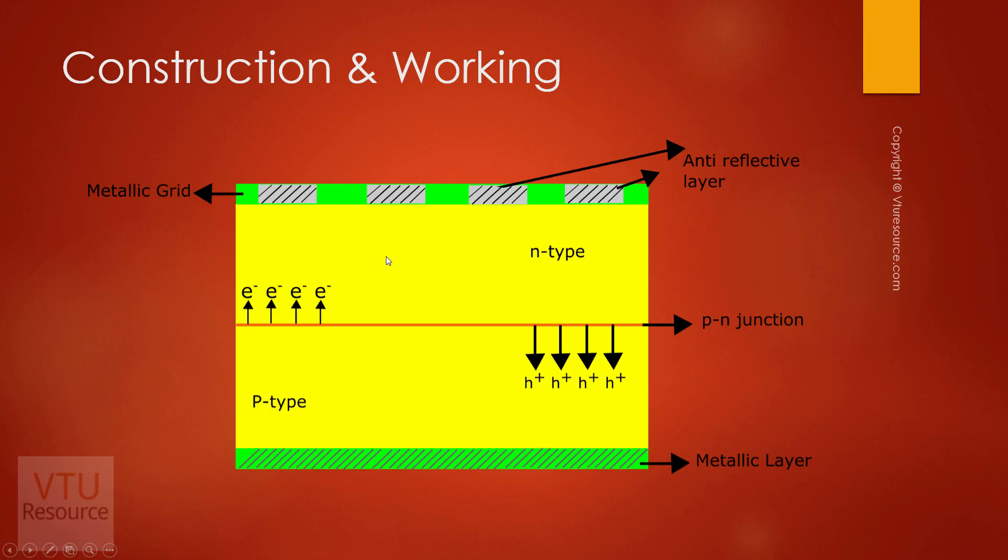Holes move towards P-type and get segregated. When these two ends are connected through an external circuit, we can see movement of electrons. Thus, obtained current is known as PV current.